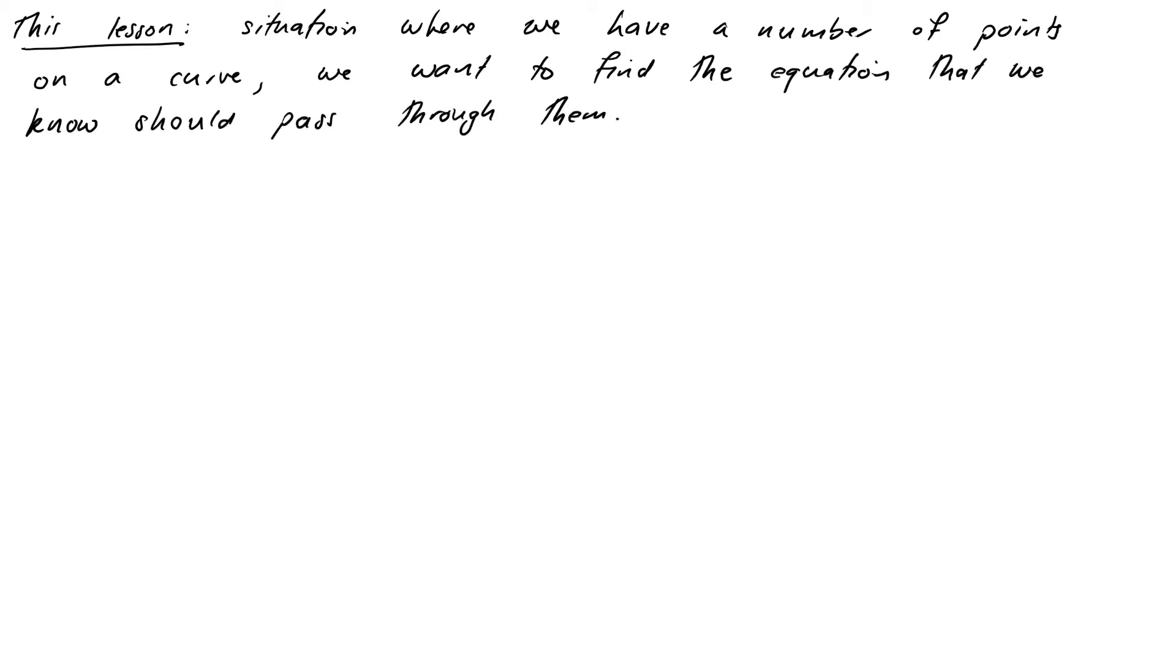So we've got a situation where we know a number of points on a curve. For example we know that two points must give us a line and we want to find a certain equation that we know should pass through them.